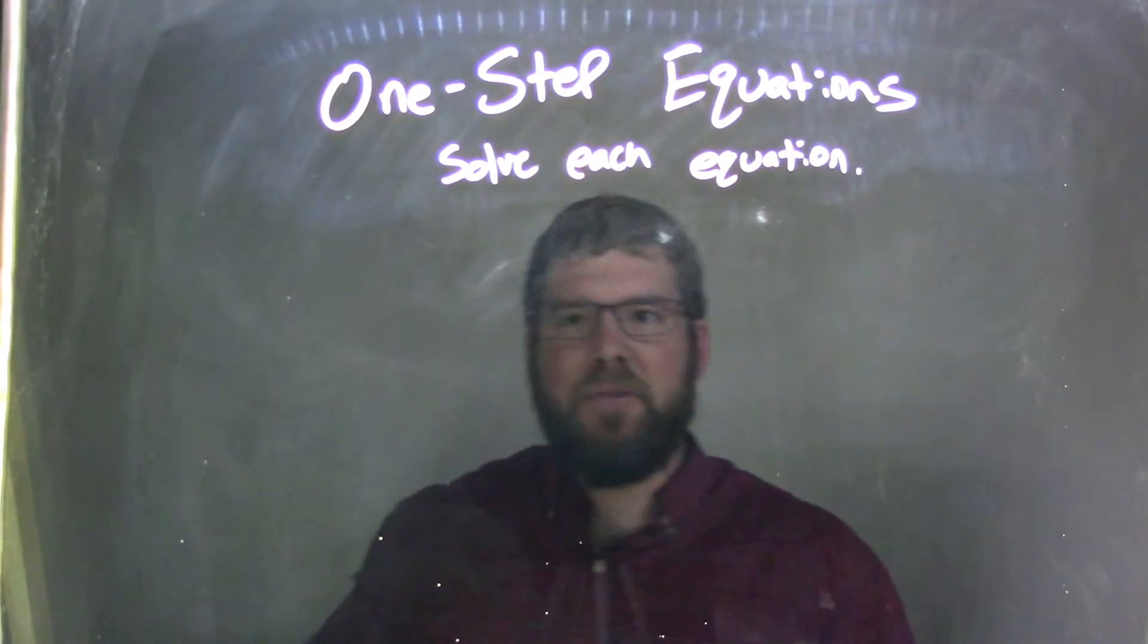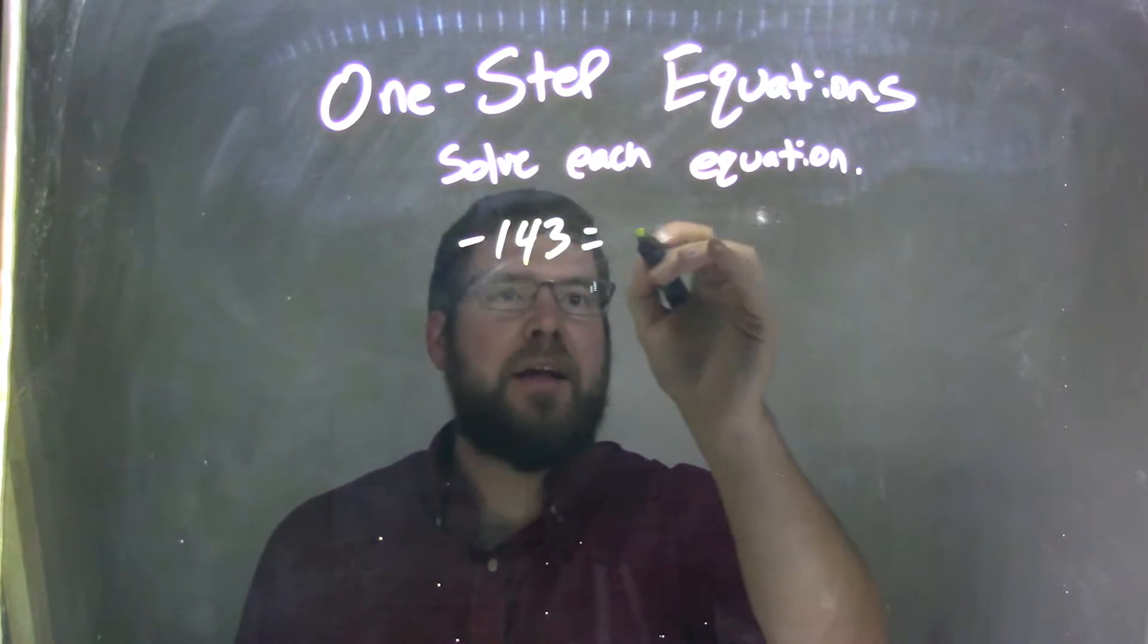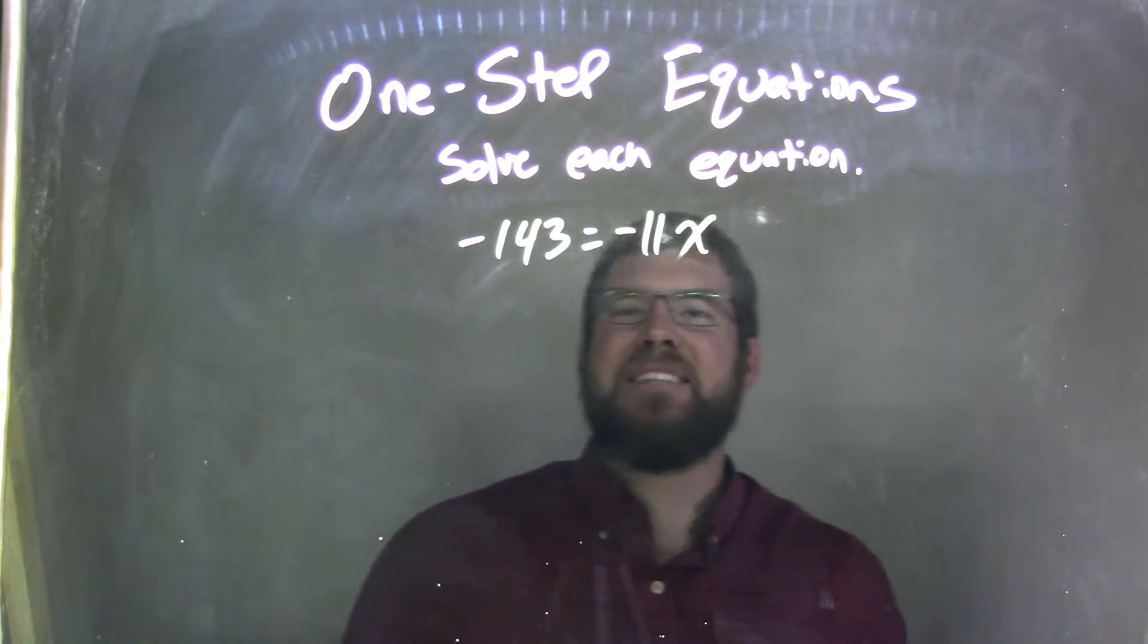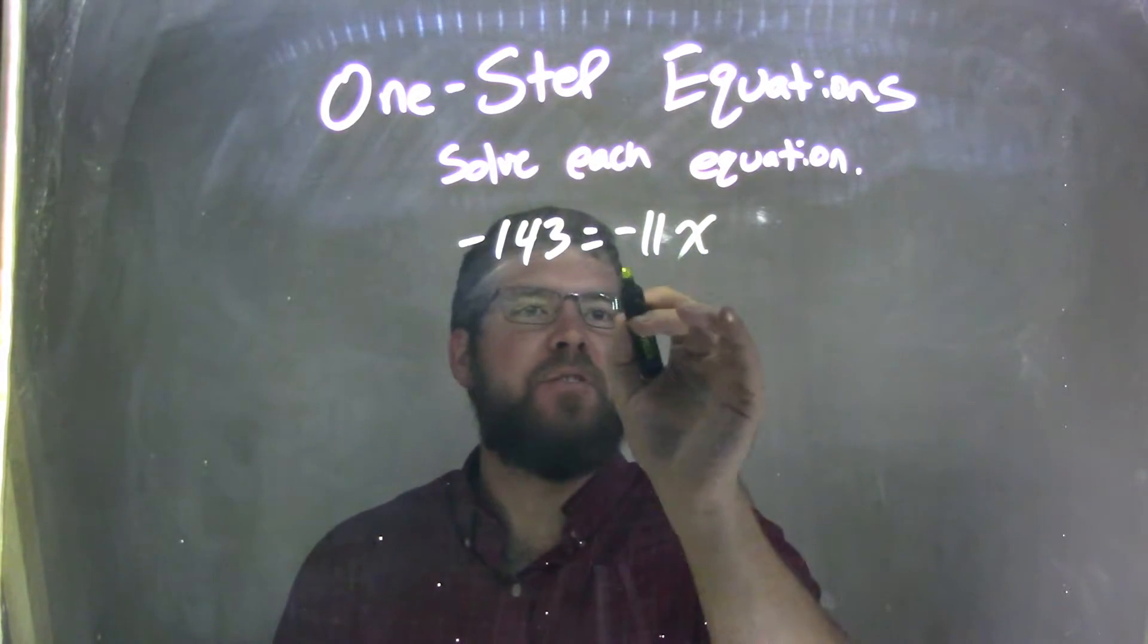So if I was given this equation, negative 143 equals negative 11x. How can I solve that? Well, I see there's negative 11x right here. That's multiplication. Opposite multiplication is division.